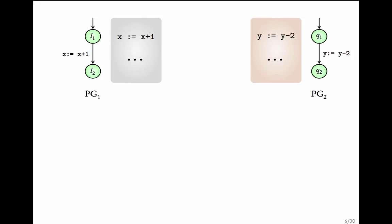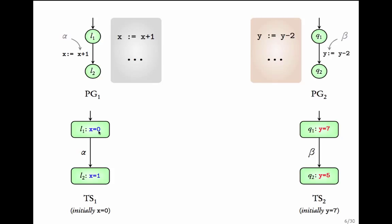Let us see another example. Consider two simple programs. Program 1 assigns x to x plus 1. Program 2 assigns another variable y to y minus 2. This is the program graph corresponding to program 1, and this is the program graph corresponding to program 2. Assume that these two programs are running parallelly. How do we represent the joint behavior of this program? Let us first look at the transition system corresponding to these programs with some values of variables.